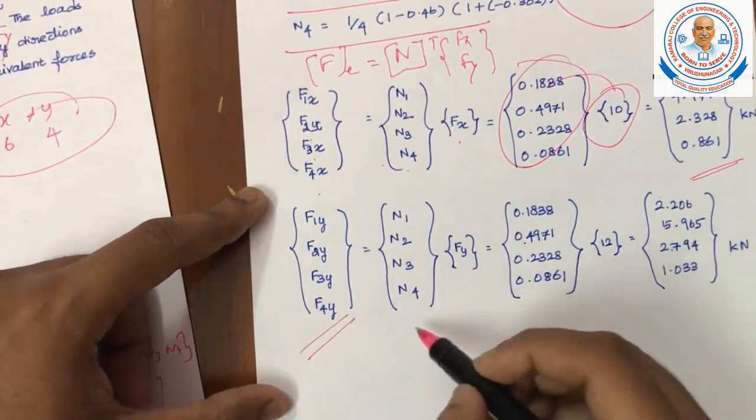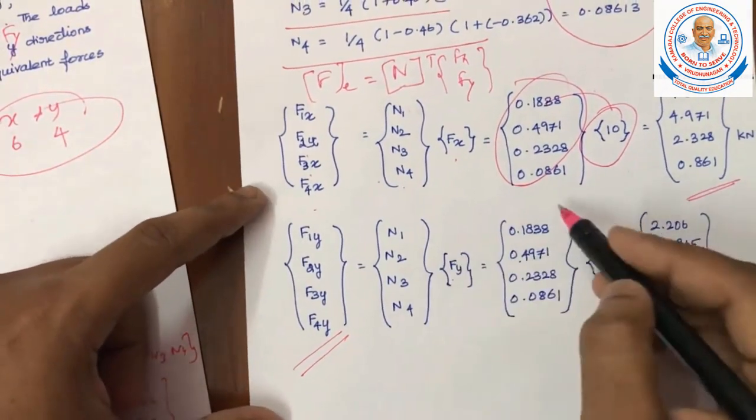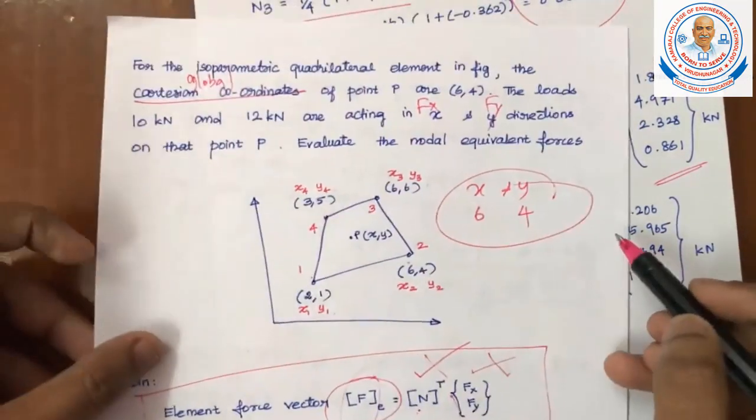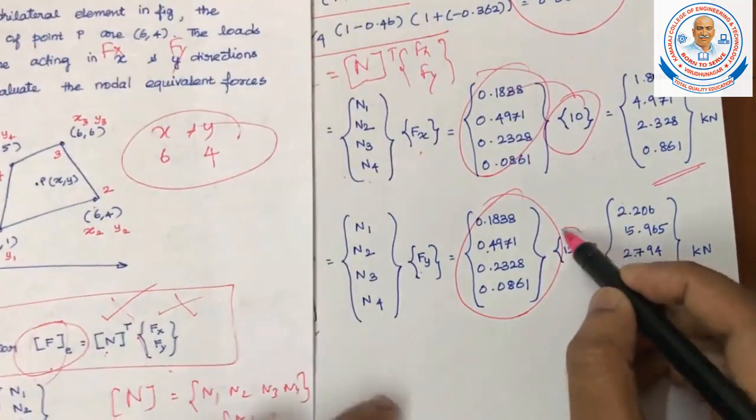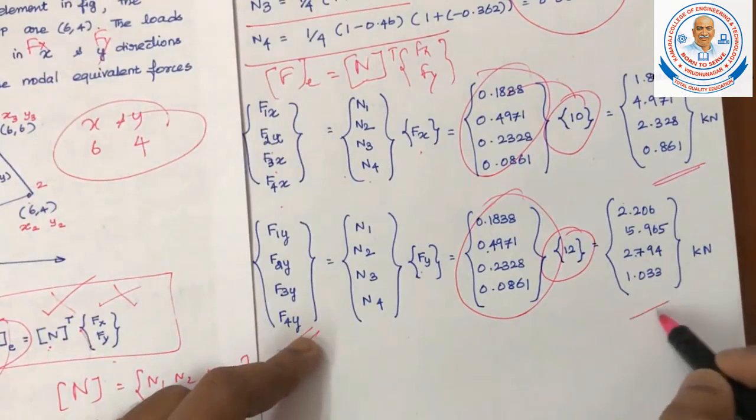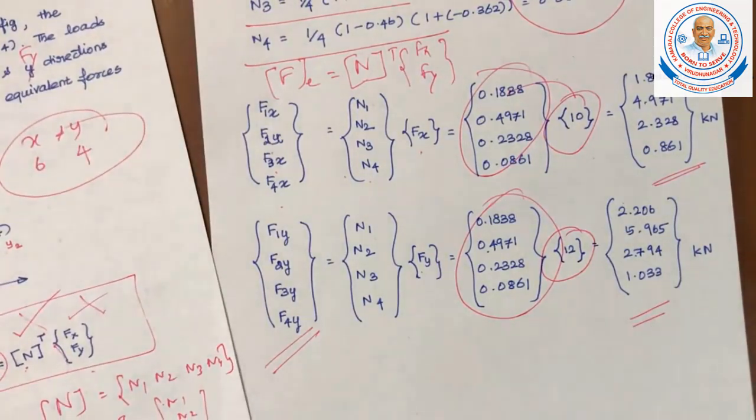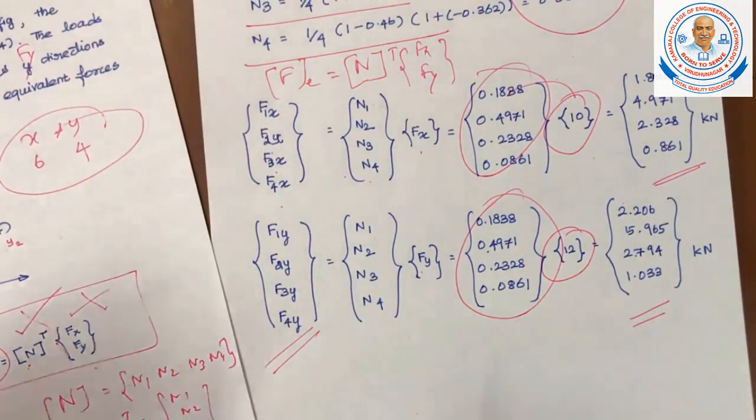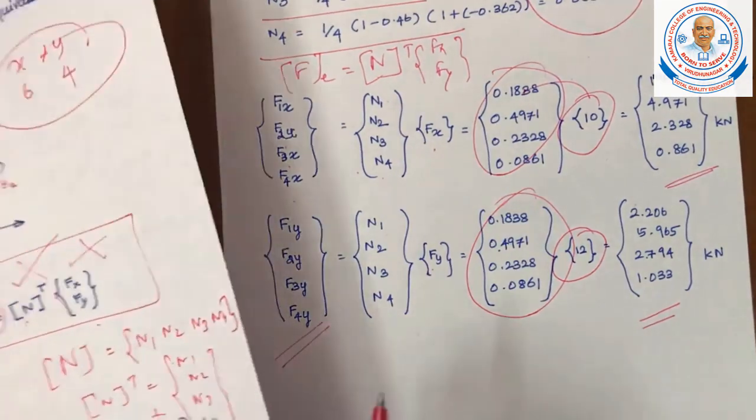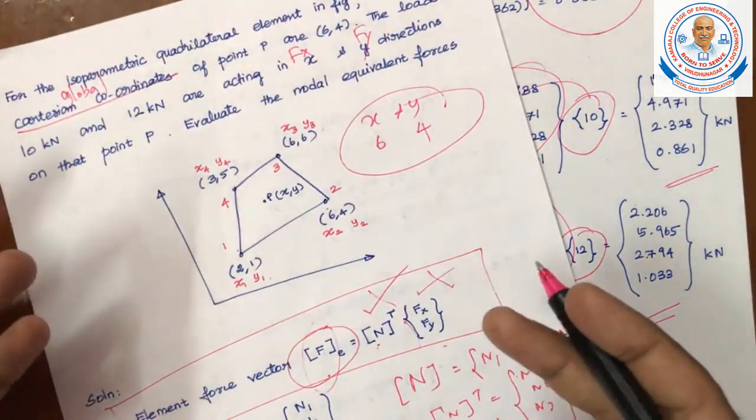Similarly, find out the force vectors in terms of y: f1y, f2y, f3y, f4y. Similarly, the same N1 matrix, which is multiplied with fy, that is 12 kilonewton given in the problem. Here you will get the force vector in terms of fy. This is the question, this is the problem.